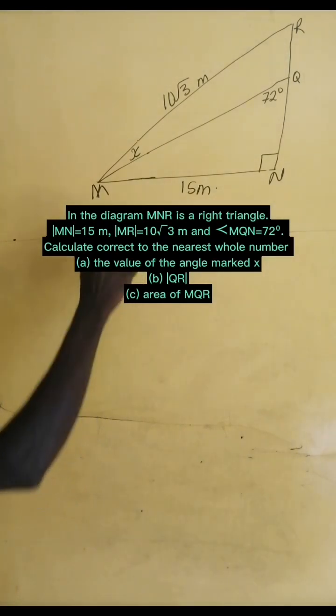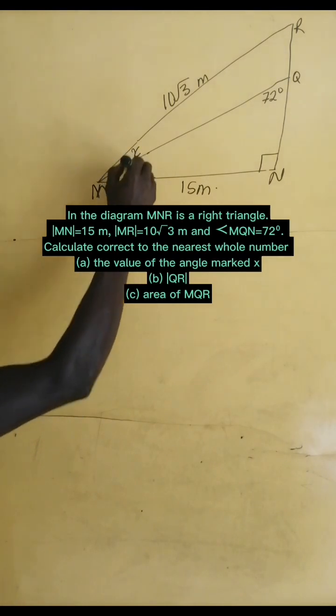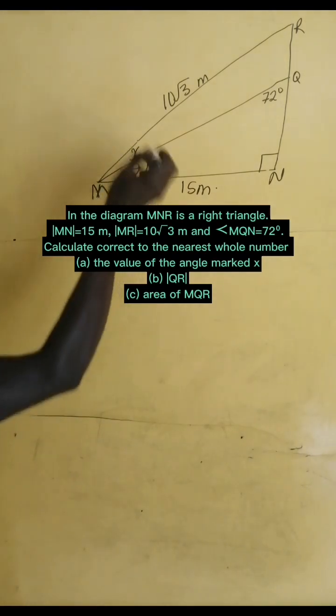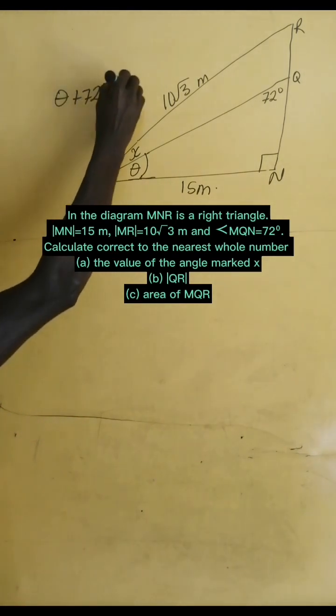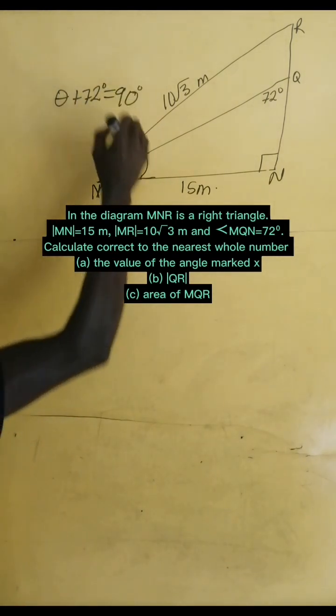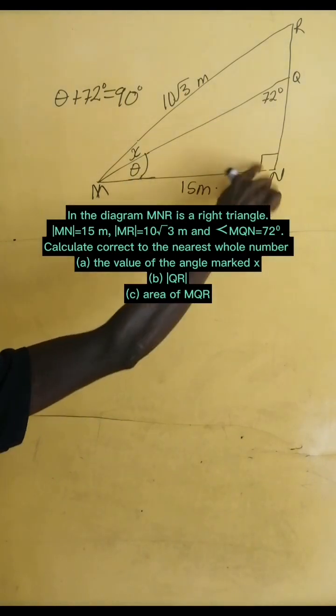Let's see how we use this information to answer parts A to C. Now, let's make this angle theta. Theta plus 72 degrees equals 90 degrees. That's very simple.